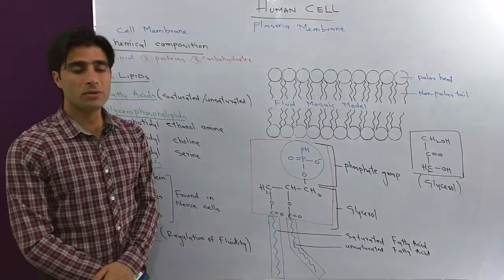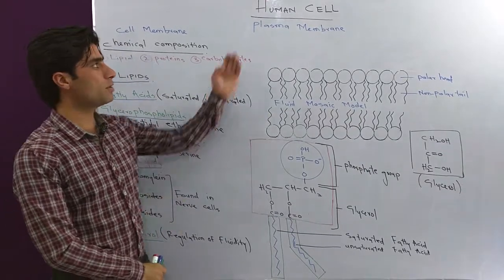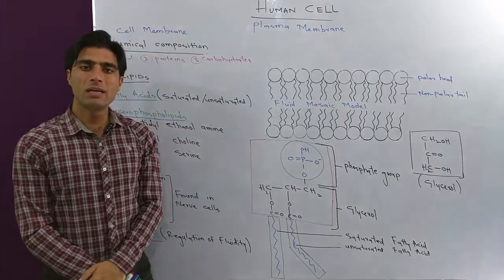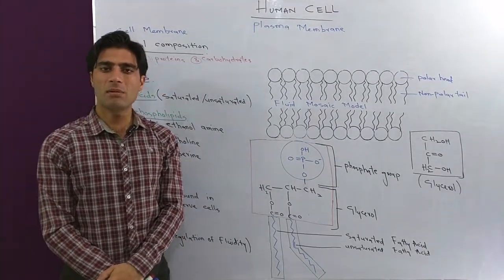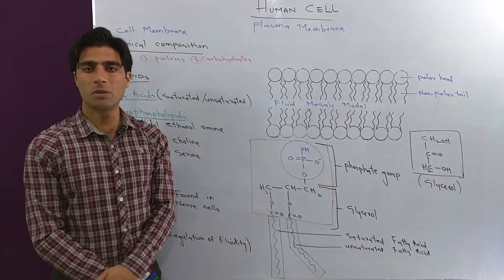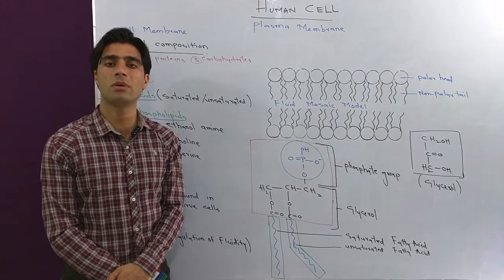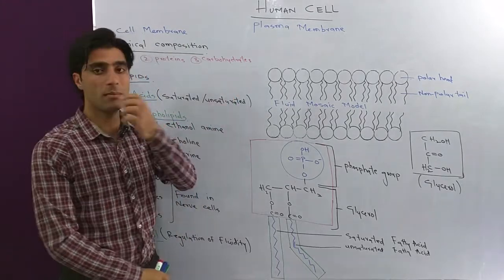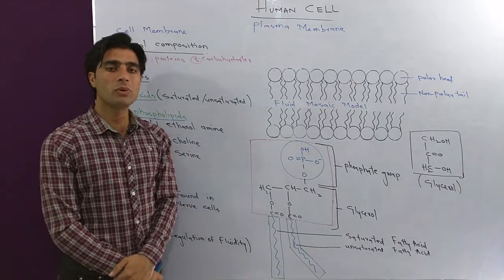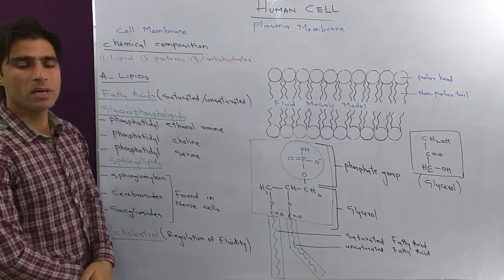Hello students, today we are covering the next topic of biochemistry: the human cell, specifically the plasma membrane. As I mentioned in my initial videos, the plasma membrane is a lipid bilayer responsible for protection of certain organelles and for semi-permeability, among other functions.